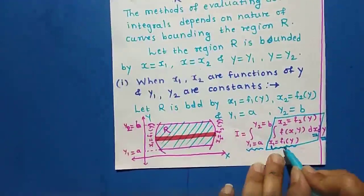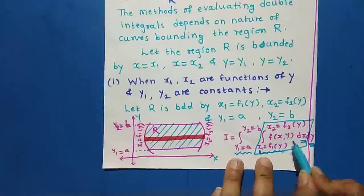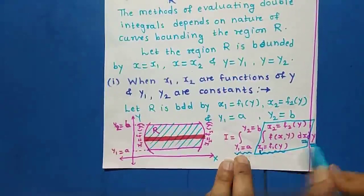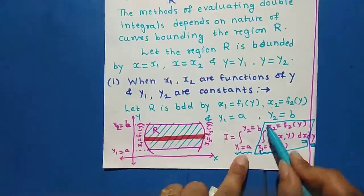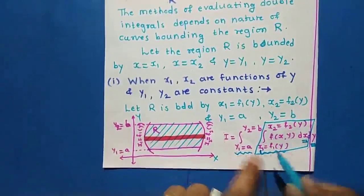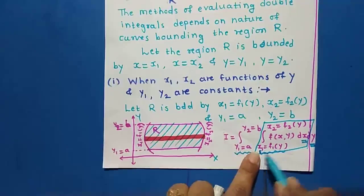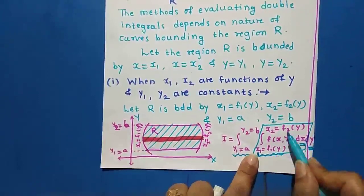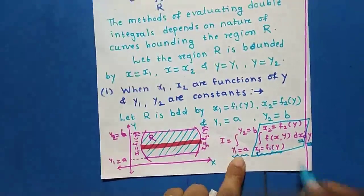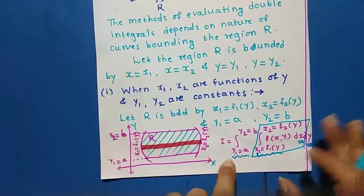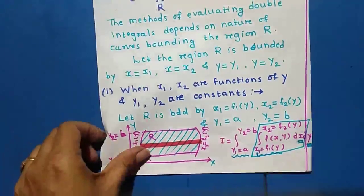Our given integration can be written as: the outer integral where y varies from a to b, and the inner integral where x varies from f1(y) to f2(y), of f(x,y) dx dy. Since the inner integration is with respect to x, we first write dx, then dy. We evaluate the inner integration first — that is, we integrate f(x,y) with respect to x, apply its limits, and the result obtained is further integrated with respect to y.